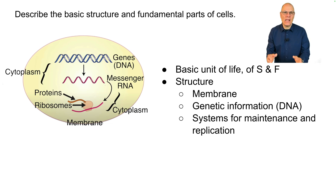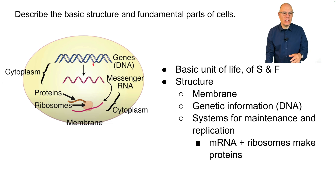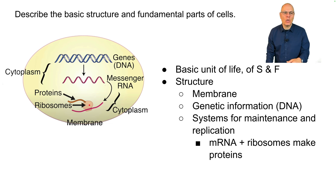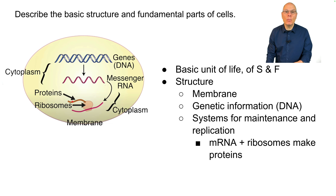Cells always have genetic information in the form of DNA, the double helix. There are systems that maintain and replicate the cell's genetic information. One of the most important systems is transcription, by which genes in DNA get transcribed into messenger RNA, another nucleic acid. That messenger RNA is then read by a particle called a ribosome.